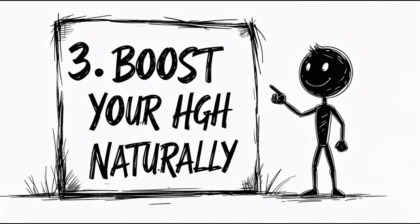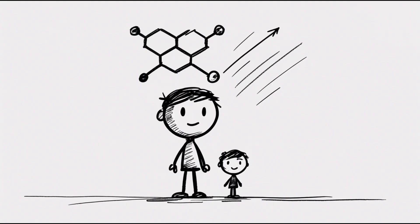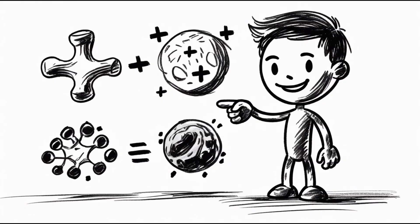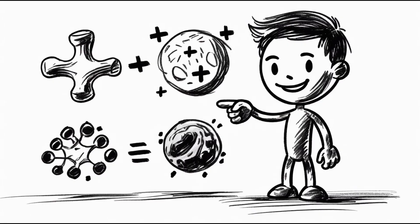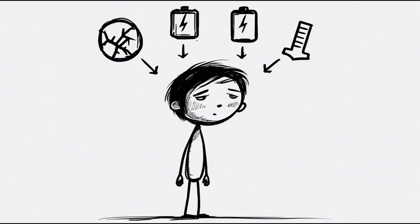Three. Boost your HGH naturally. Growth hormone isn't just for kids. Even as an adult, HGH, human growth hormone, controls cell repair, bone density, and tissue growth. Low HGH means weak bones, low energy, and yes, stunted height potential.